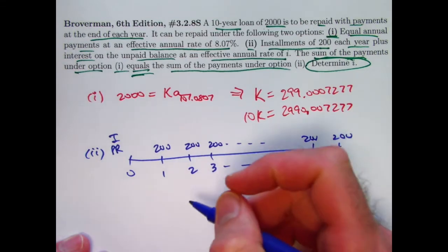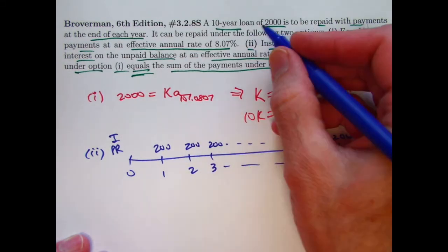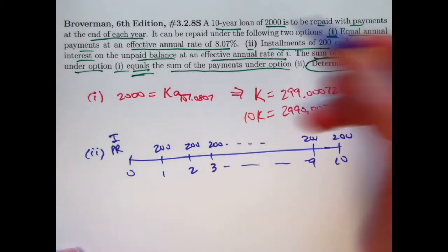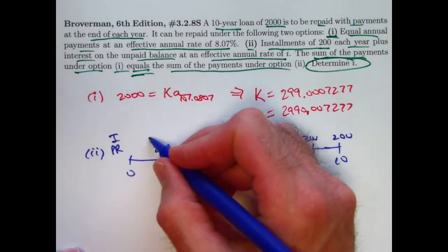What about the part that goes toward interest? At the end of the first year it would be the outstanding balance, the loan amount at time zero, times the interest rate i. It'll be 2,000i.